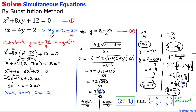Here is our answer with two sets of ordered pairs. The first one is (2, negative 1), and the second one is (negative 6 over 5, 7 over 5). That is our final answer. Thanks for watching, and please don't forget to subscribe to my channel for more exciting videos.